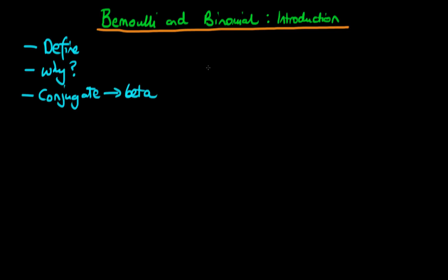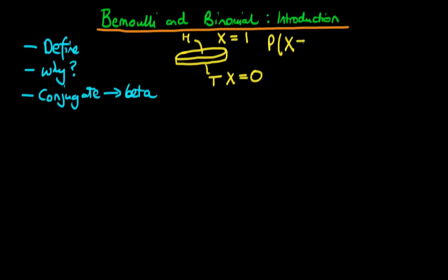Let's first start off by defining what is actually meant by a Bernoulli distribution. The typical example is flipping a coin: one side is heads and the other is tails. If the coin comes up heads, the random variable takes a value of 1; if it comes up tails, the random variable equals 0. The probability that x equals 1 is set equal to theta, and the probability that x equals 0 is therefore 1 minus theta.